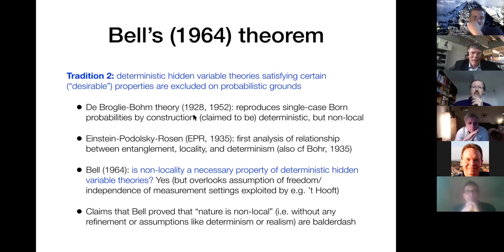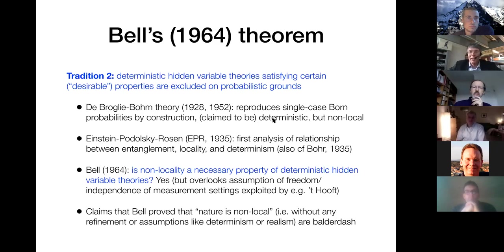One of the things that started this game was the de Broglie-Bohm theory, which reproduces single-case Born probabilities by construction, is claimed to be deterministic, but is non-local. This became mixed up with the famous EPR paper, which was the first analysis of the relationship between entanglement, locality and determinism — including Bohr's infamous reply to it.